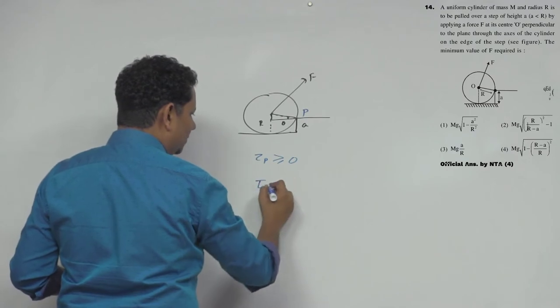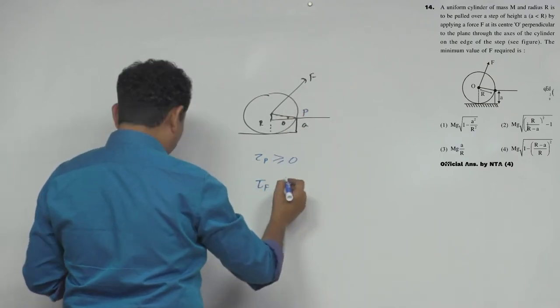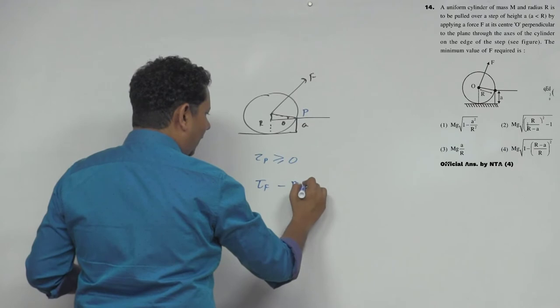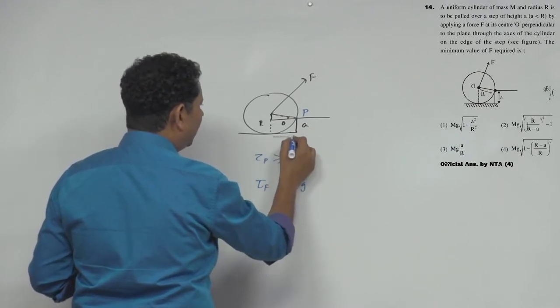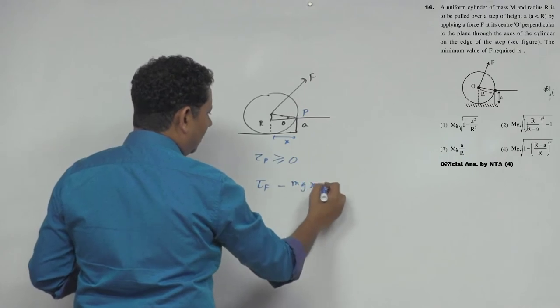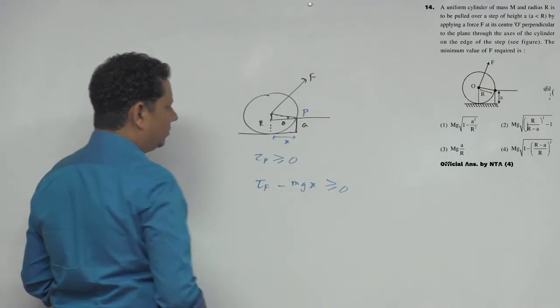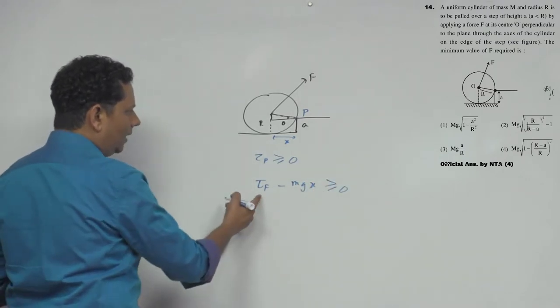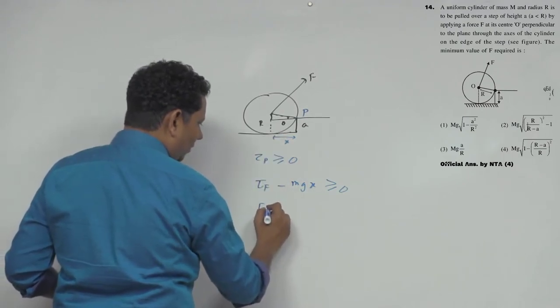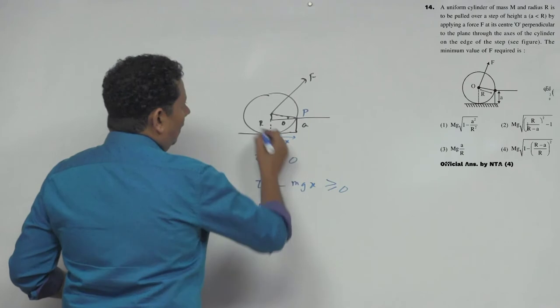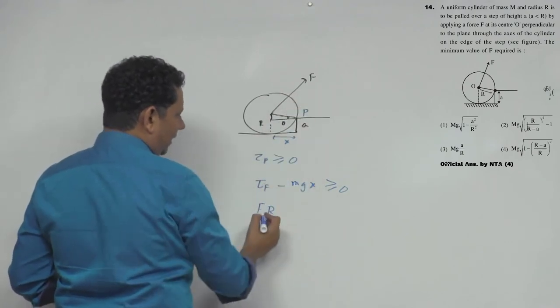Torque of force minus the torque of mg multiplied by this distance, let's say from here to here is x. This should be greater than or equal to zero. The torque from force F is F dot...